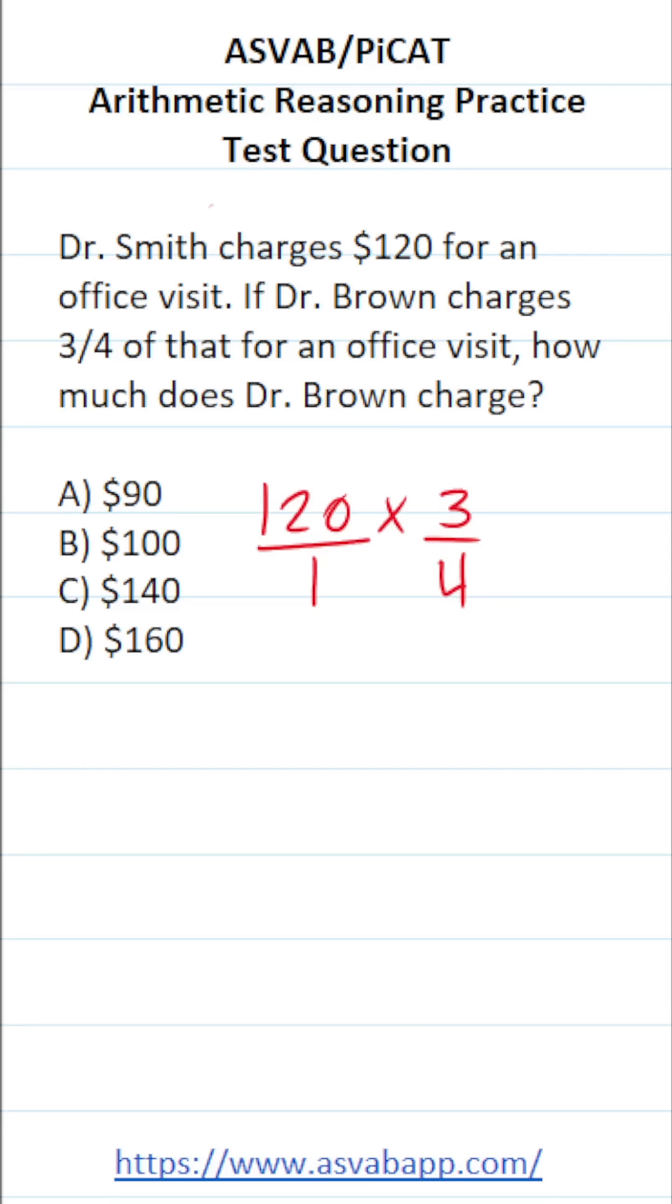And then I'm going to try to cross-reduce as much as possible. Specifically, I'm going to say 4 goes into 4 one time. 4 goes into 120, well, if you think about this one, 12 divided by 4 is 3. Therefore, 120 divided by 4 is going to be 30.